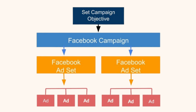Below each ad set we have the actual ads — the graphic, image, video, and text. For example, we could create three separate graphic assets: the first might be a guy at the gym, the second a guy outside running, and the third just a guy in a hoodie against a color background.